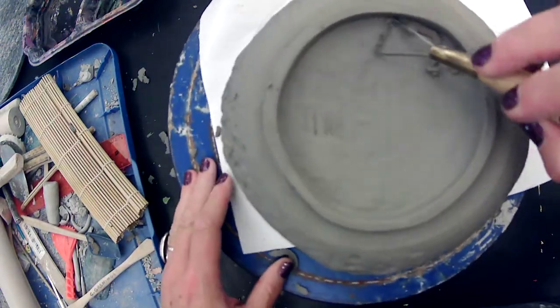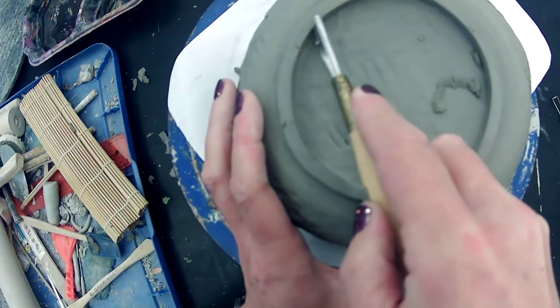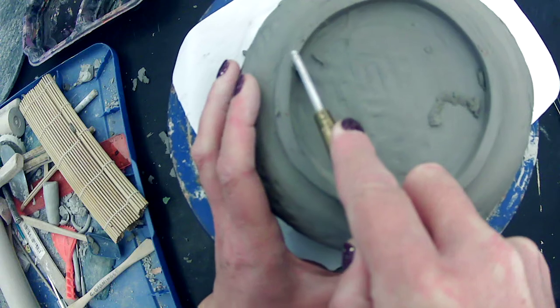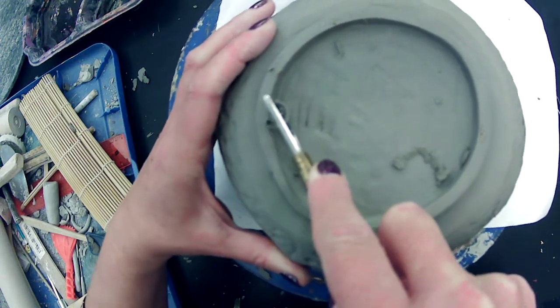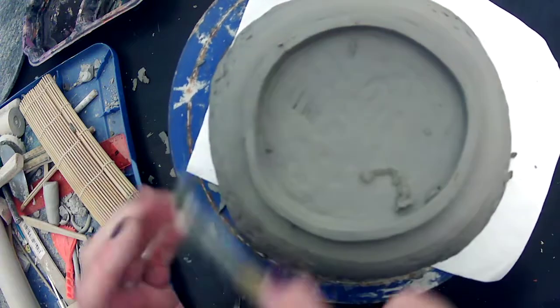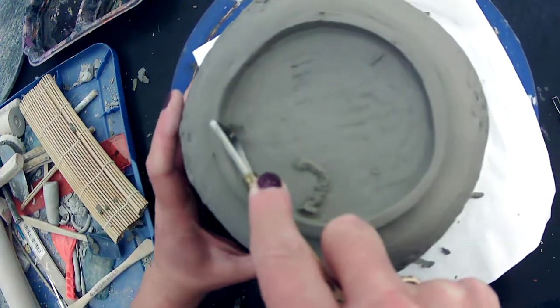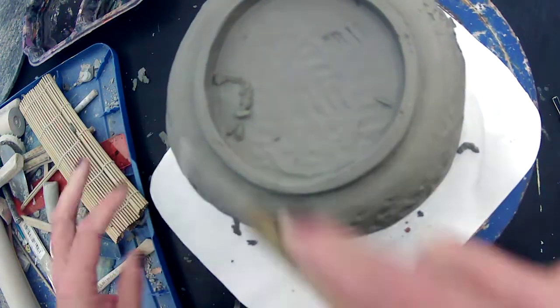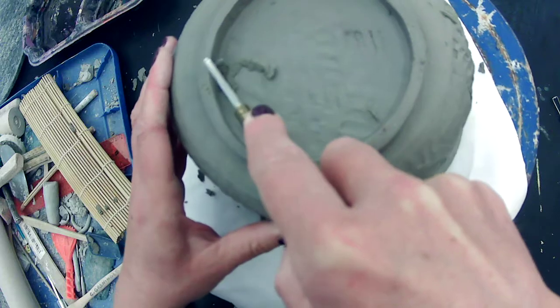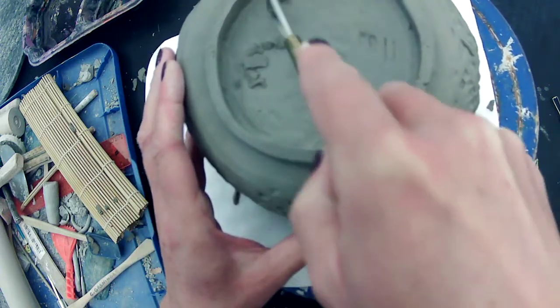I might even go on the inside here and do a little cleanup. If you don't have a loop tool or a knife tool, just find something in your house that has kind of a straight edge to it, maybe in the kitchen, and experiment with that.